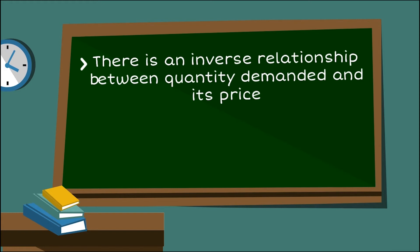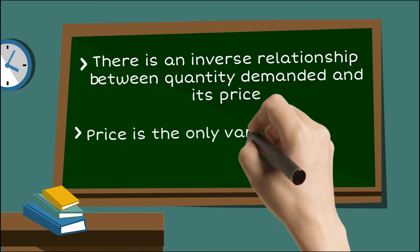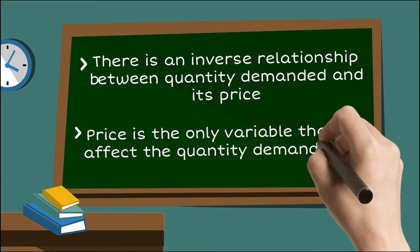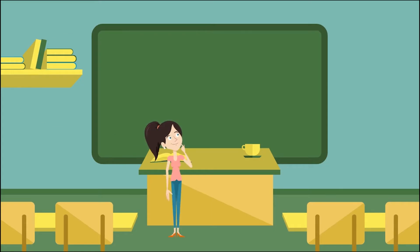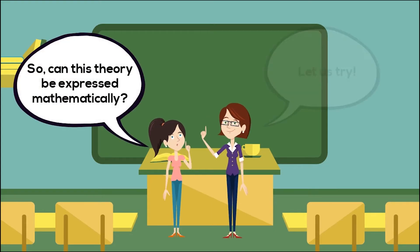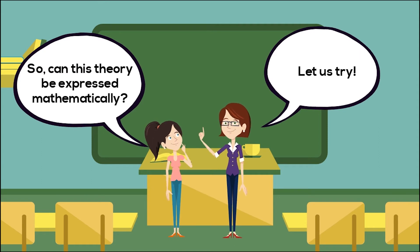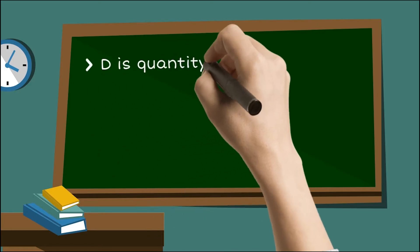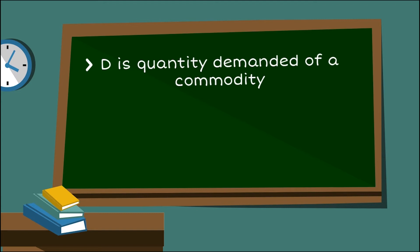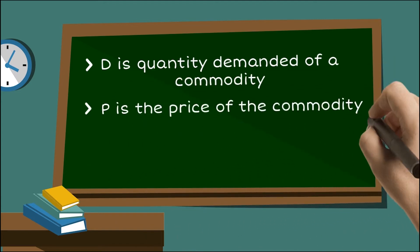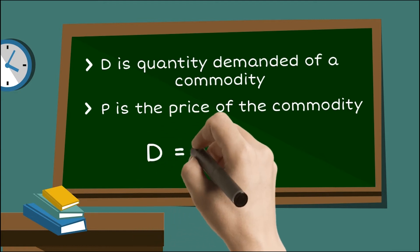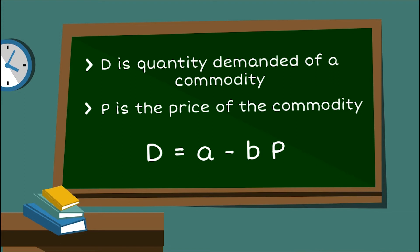So can this theory be expressed mathematically? Let us try. Let us denote the quantity demanded of a commodity by D and the price of the commodity by P. Then mathematically we can express the law of demand as D equals a minus bP.